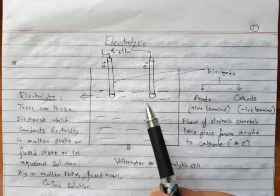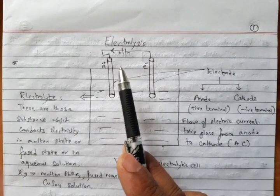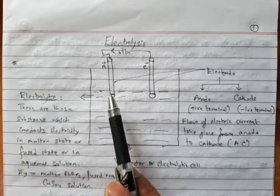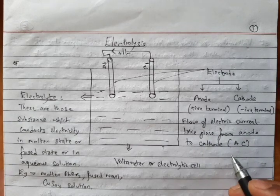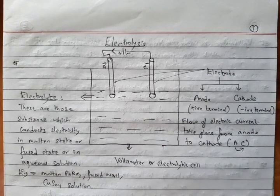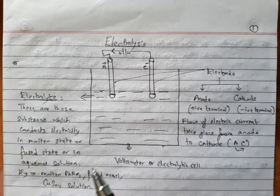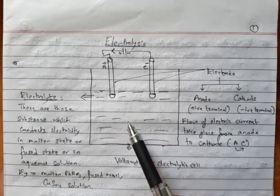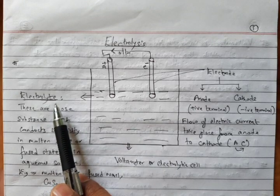It is of two types — anode and cathode, A and C, positive and negative — in which anode is positive and cathode is negative. And always remember: whenever current flows during electrolysis, it flows from anode to cathode. The flow of electric current takes place from anode to cathode. Whatever solution we put inside the electrolytic cell is called electrolyte.